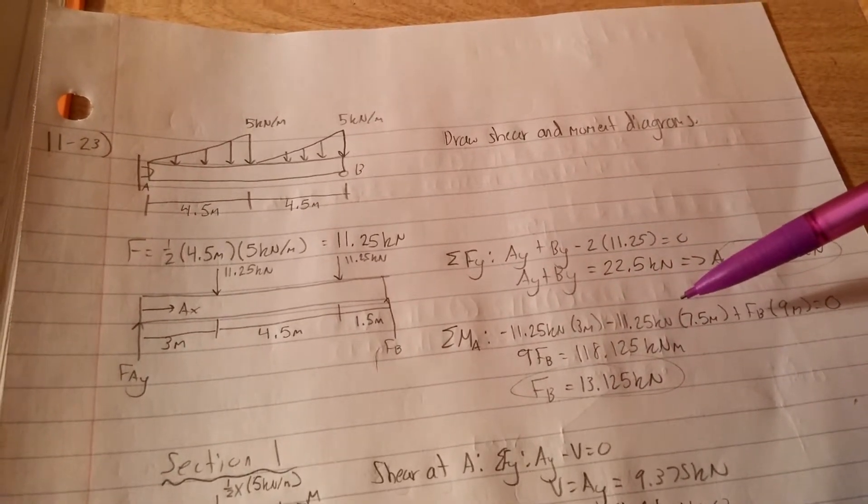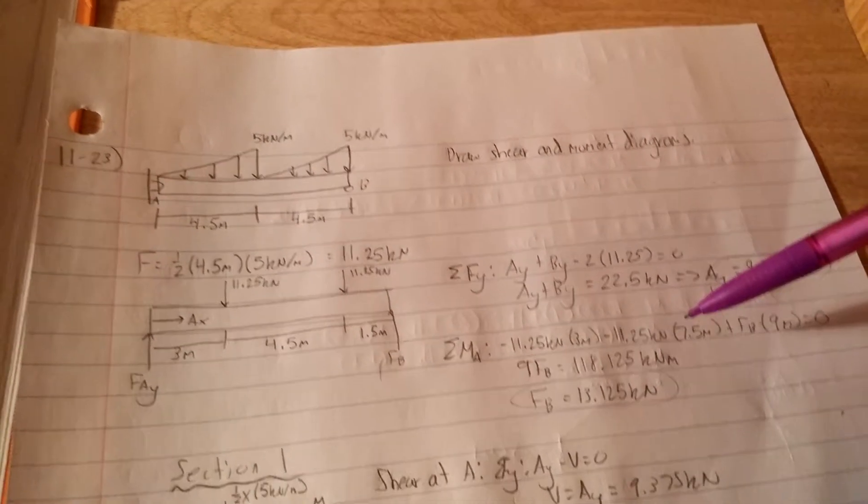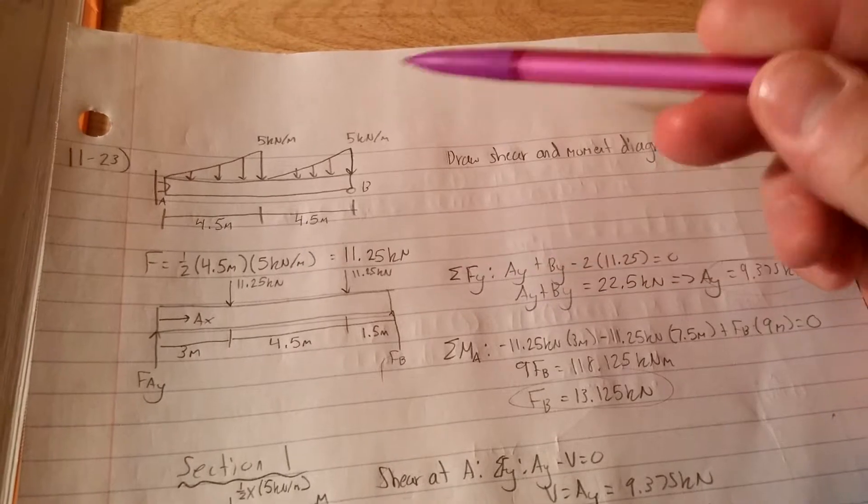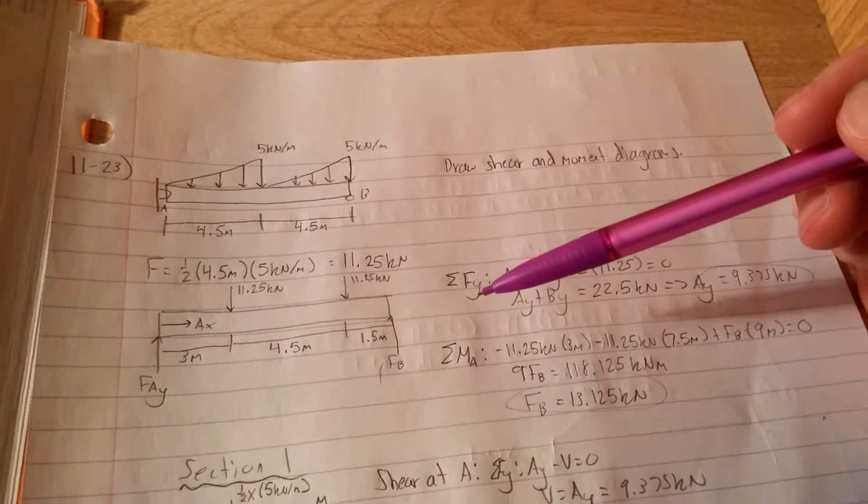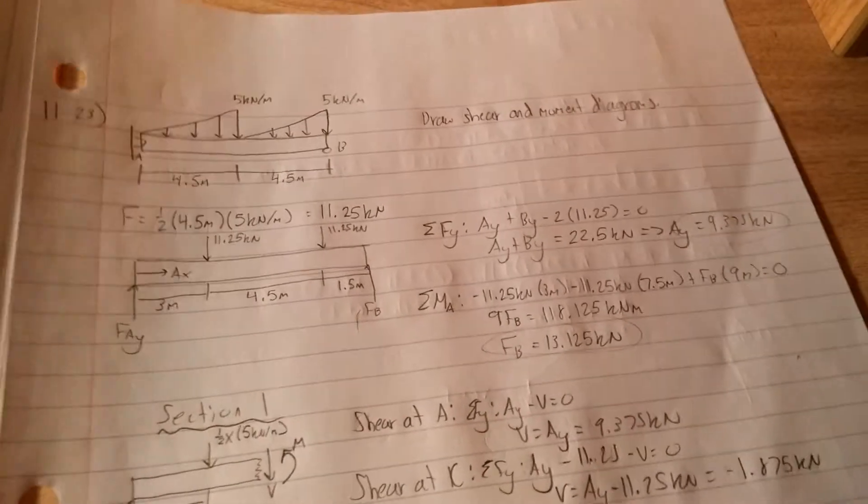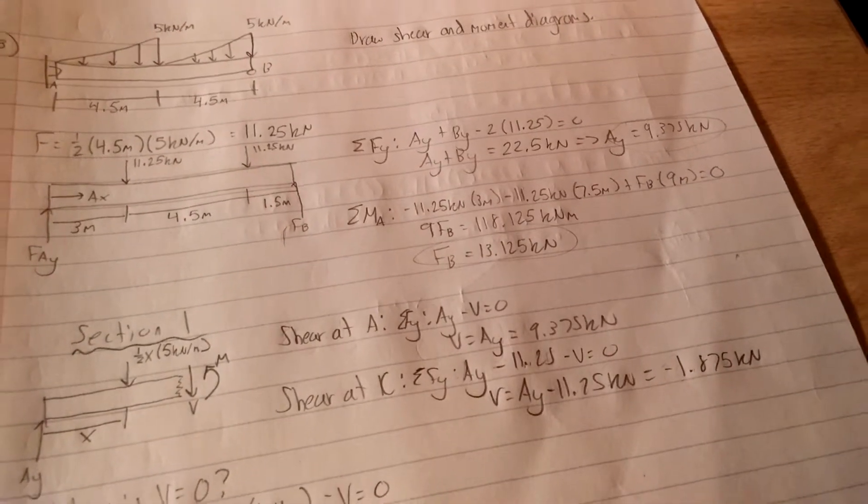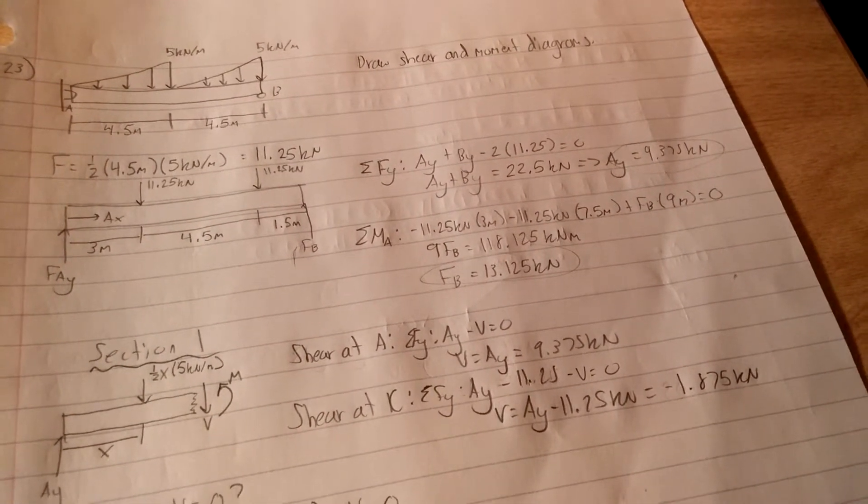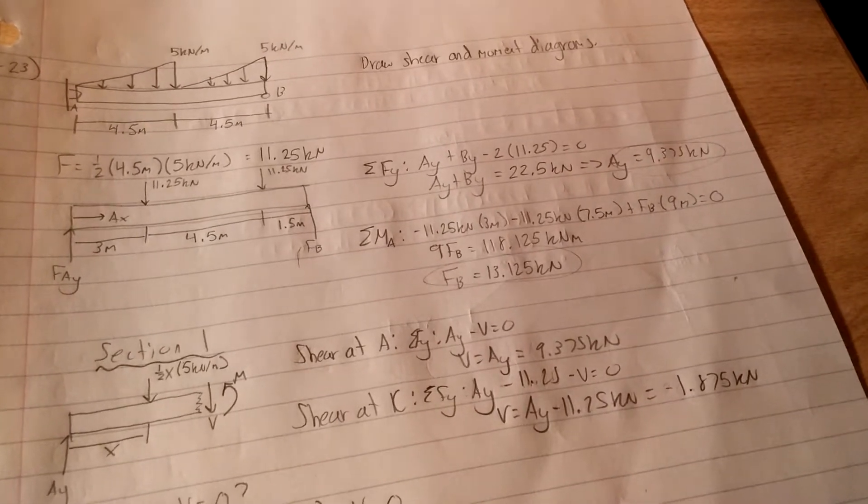So we're going to have negative 11.25 times 3 minus 11.25 times 7.5. And then B is clockwise relative to A, so that's positive. So plus FB times 9. We get 9FB equals 118.125 kilonewton meters.